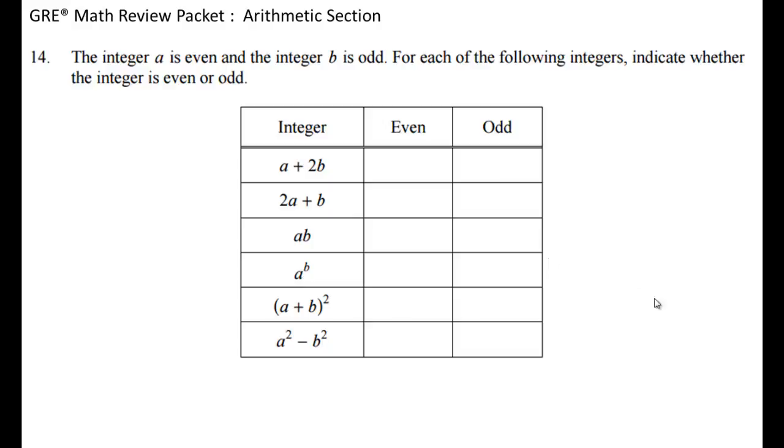Next question. A is an even integer and B is an odd integer. So, A is even and B is odd. Let's highlight that. So, we're going to create a chart with a bunch of different formulas combining A's and B's together. There'll be integers and the question is, will that integer that you get out be even or odd? So, before we do that, we want to make sure that we understand how it works.